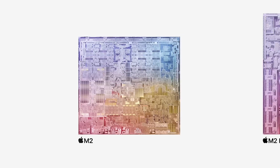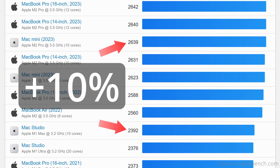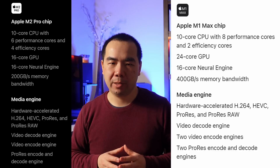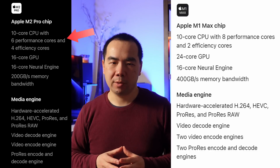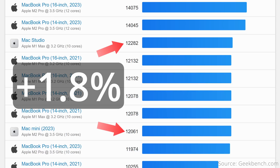Now let's get to the primary difference: the chip. M2 is a different generation of Apple Silicon than the M1 series, so comparing core count numbers alone won't tell the whole story. For CPU single-core performance, the M2 Pro is about 10% faster than the M1 Max. Both have 10-core CPUs, but the M2 Pro has only 6 performance cores while the M1 Max has 8. Despite M2 cores being slightly faster, the M1 Max Mac Studio multi-core performance is slightly faster than the M2 Pro's — but only by 1.8%, so it's very close.